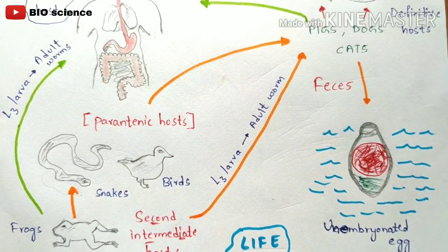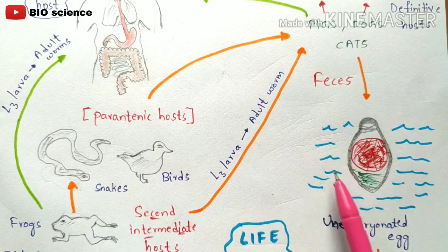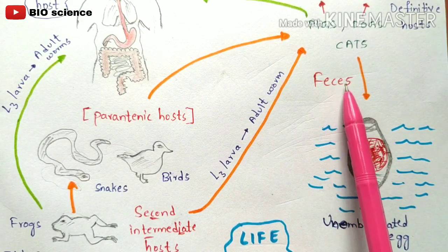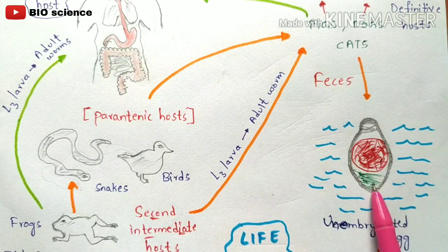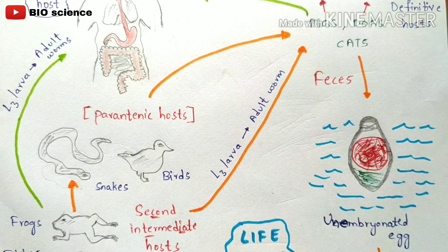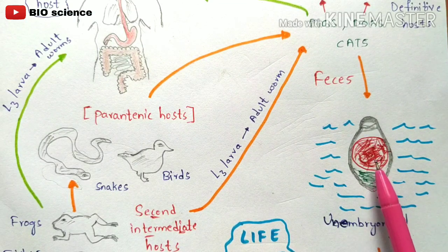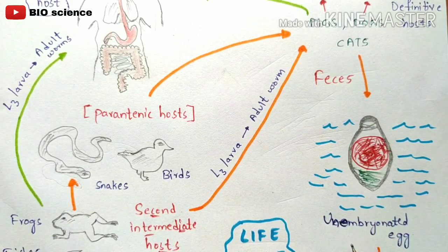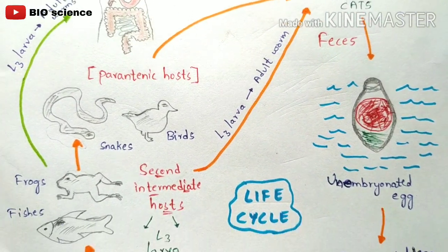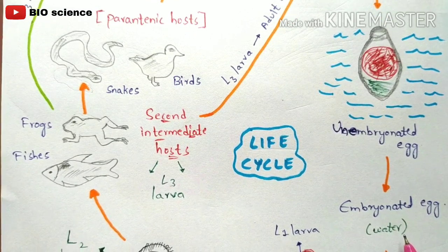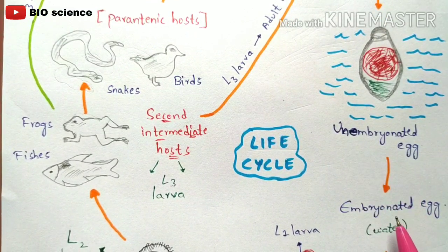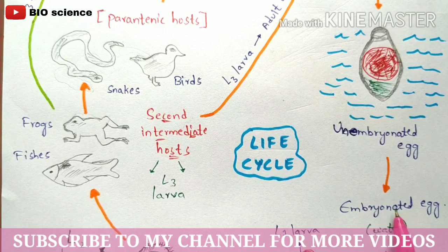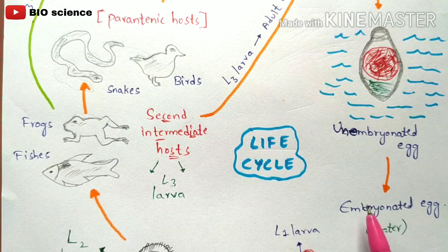As shown in the diagram, in the water the fecal material and eggs are released together. These eggs are called unembryonated eggs, because the larvae have not yet developed inside the cytoplasm of the egg. In the water itself, the unembryonated egg will develop into an embryonated egg. It is called an embryonated egg because the larvae will have developed inside it.